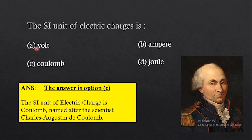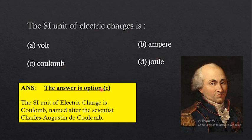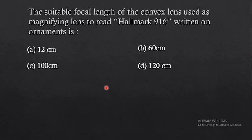Volt is the SI unit of voltage, ampere is the SI unit of current, and joule is the SI unit of energy. But the question asks for the SI unit of electric charge, which is coulomb. So the correct answer is option C.